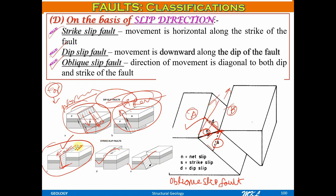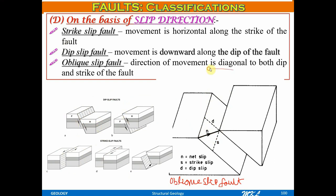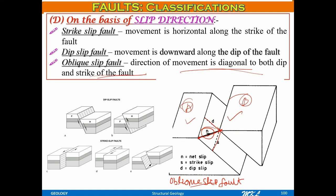For an oblique slip fault, the direction of movement is diagonal to both the dip and strike directions. So the block is neither moving only in the strike direction nor only in the dip direction — both strike and dip components are present. It moves oblique to both, and this is called an oblique slip fault. The direction of movement is diagonal to both the dip and strike of the fault.